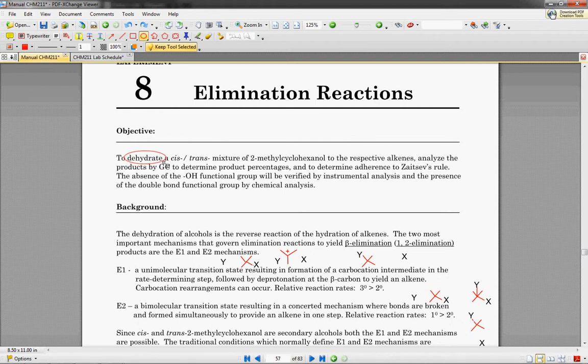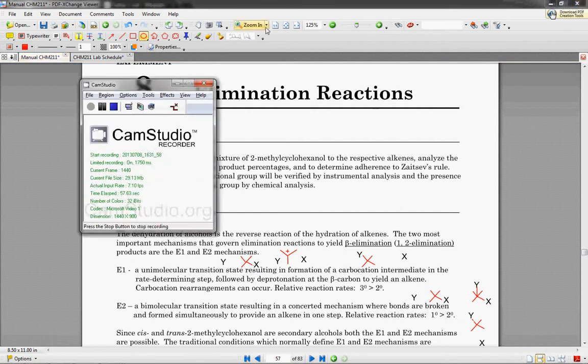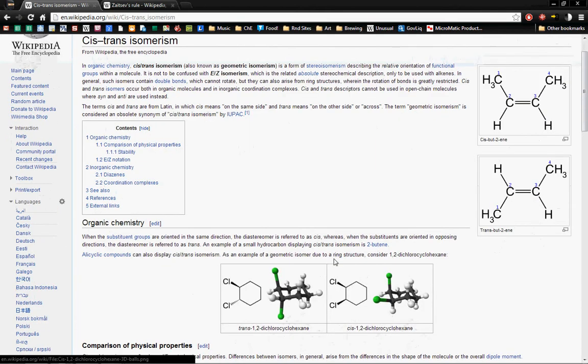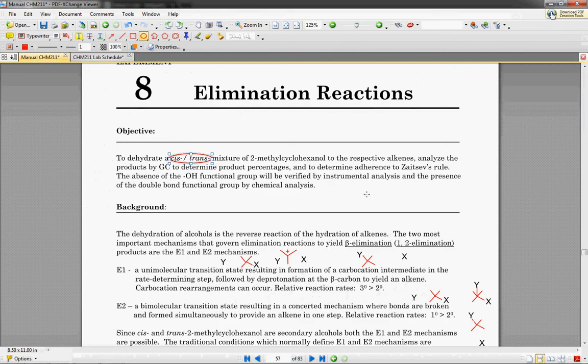To dehydrate just means to remove this hydroxyl functional group and turn it into a water group. A cis-trans mixture: I've pulled up some nice pictures for you. Cis just means it's on the same sides if drawn flat, and trans means it's on opposite sides. Here you have a nice three-dimensional model of cis and trans. This one is trans because it's going on opposite sides, one's facing up, one's facing down, and this one's cis because they're both kind of facing up.